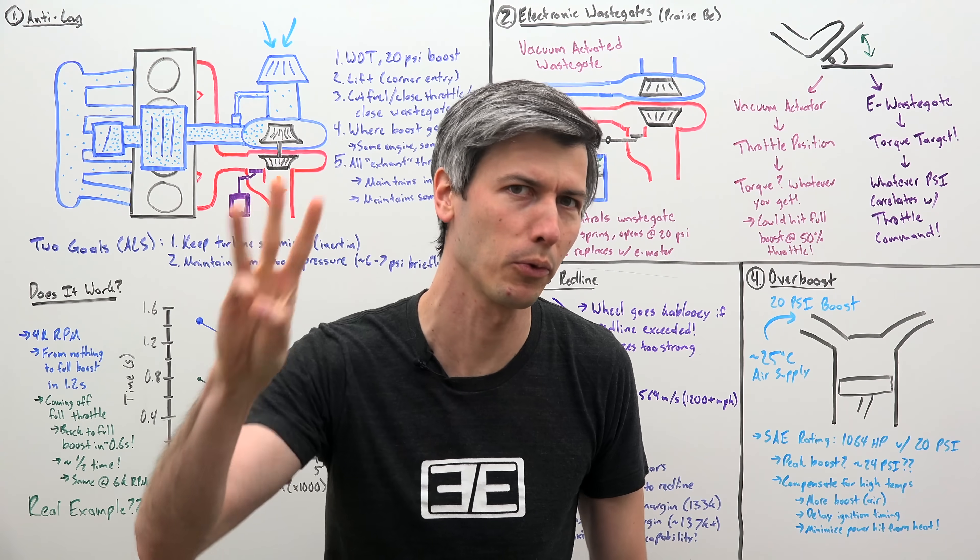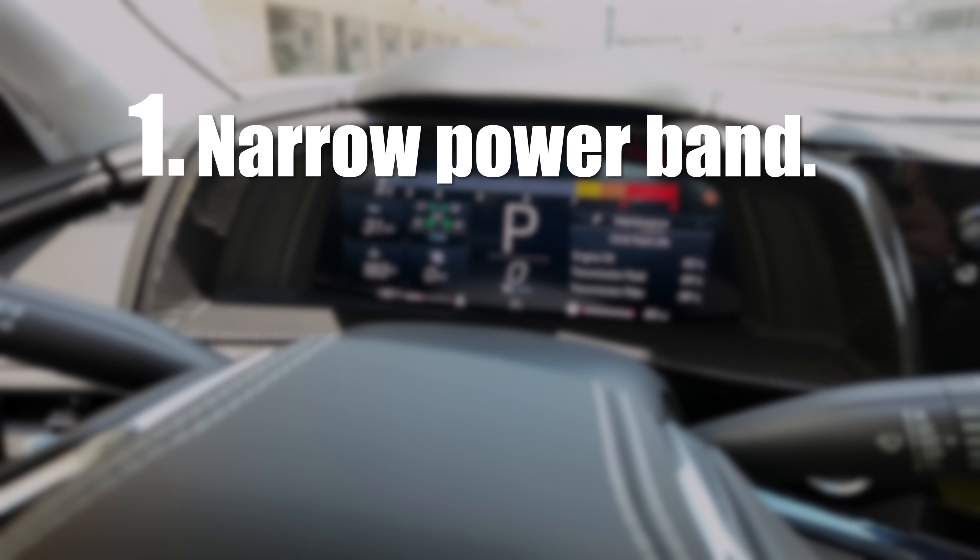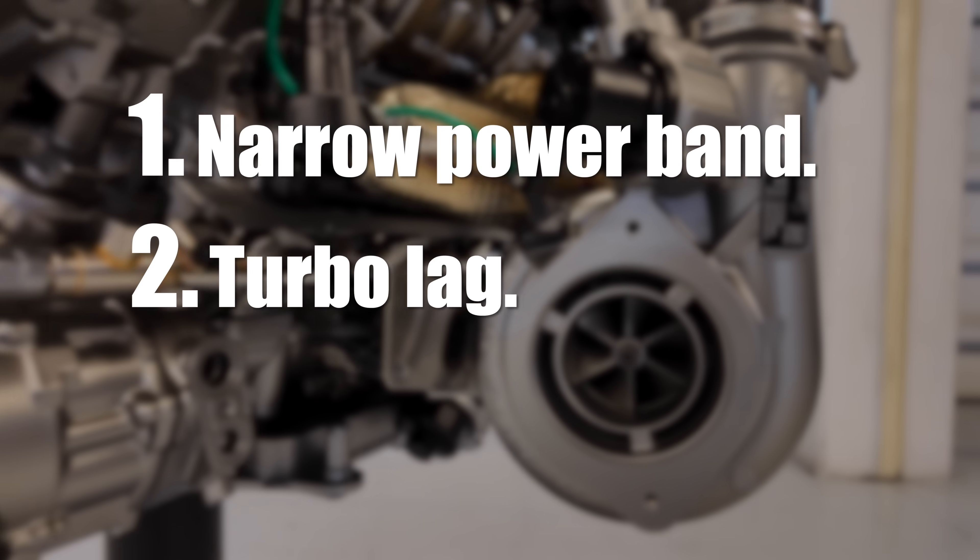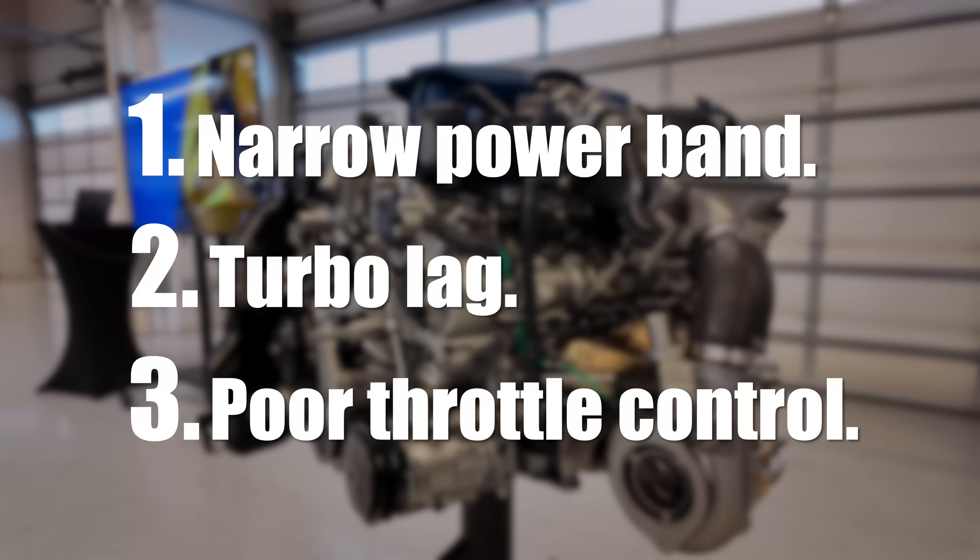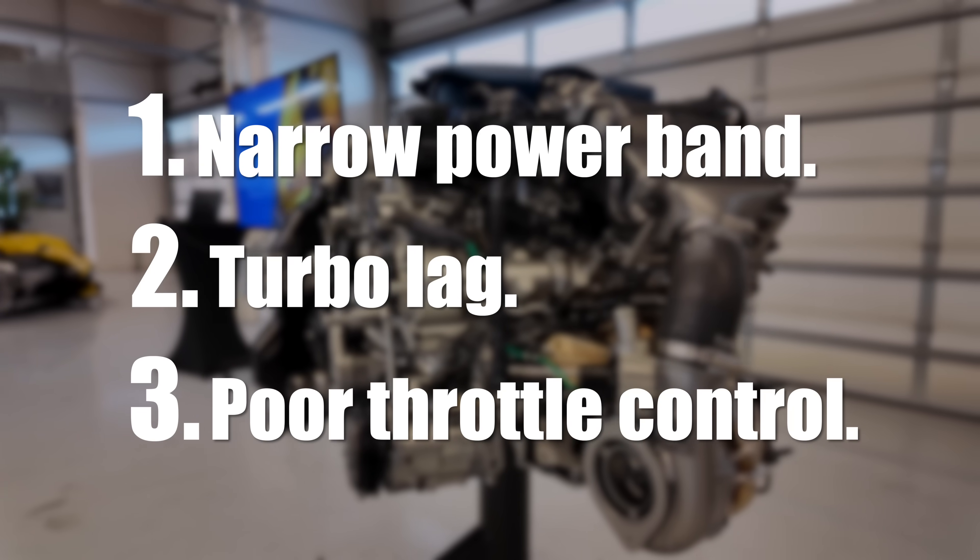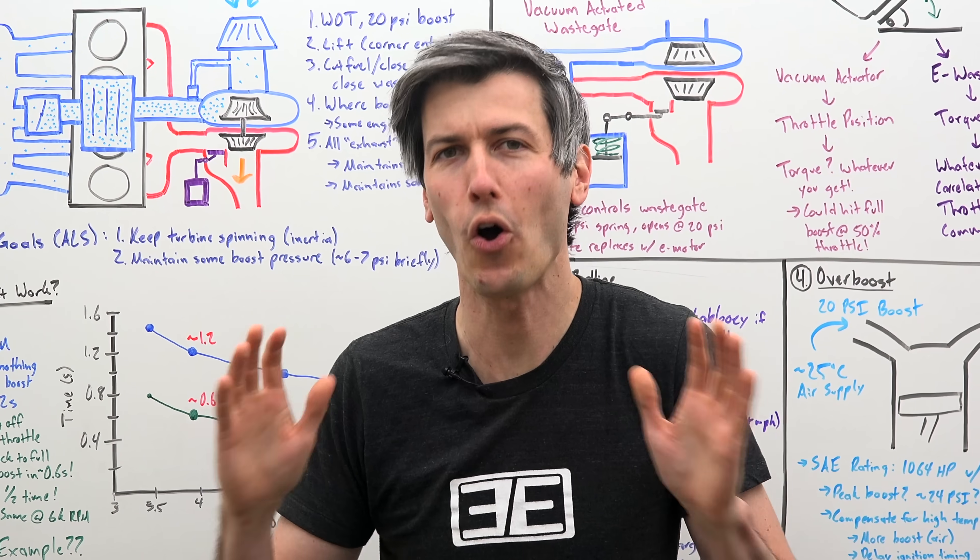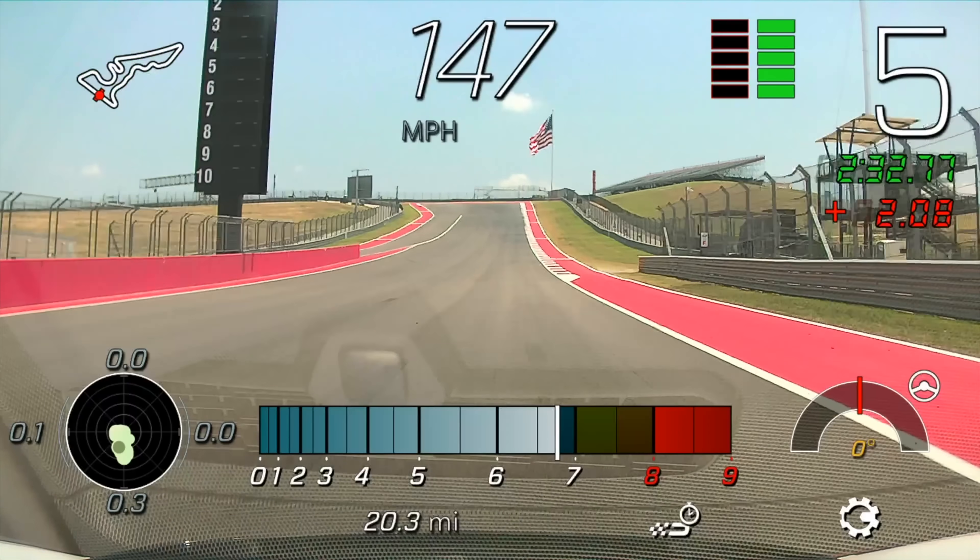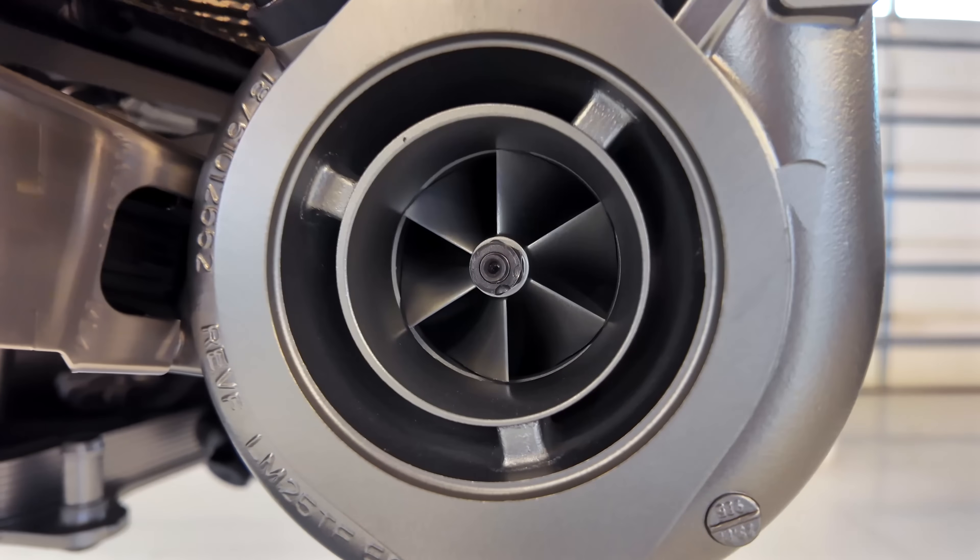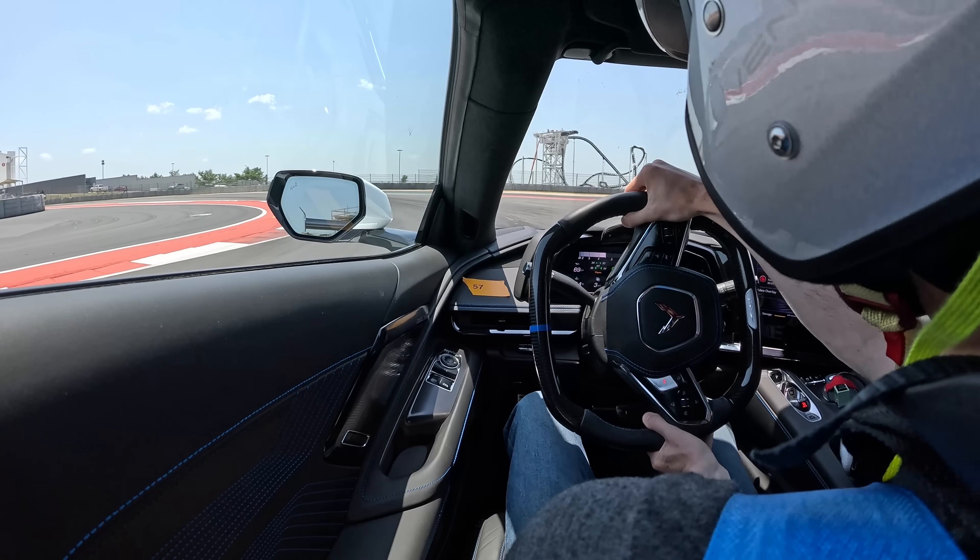Turbocharged cars have suffered from three major flaws: a narrow power band with no bottom end torque, turbo lag with delayed response, and poor throttle control especially at partial throttle. But recent history reverses pretty much all of these: massive wide torque curves, minimal turbo lag, and exceptional throttle control.